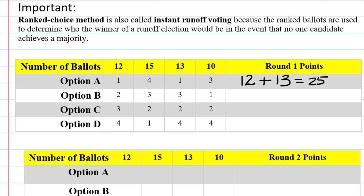Now let's look at option B. Option B got first place on the last ballot variation, which 10 voters had, so we're going to have 10 points for option B. Now let's look at option C. Option C had no first place rankings, so option C gets zero points. Now option D had one first place ranking in the second column, which had 15 voters, so option D gets 15 points.